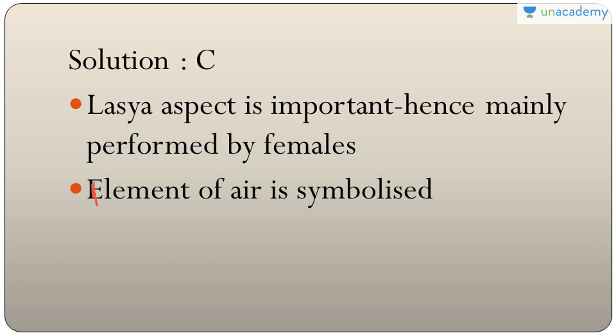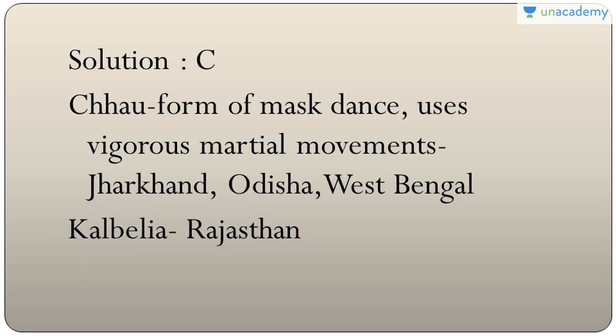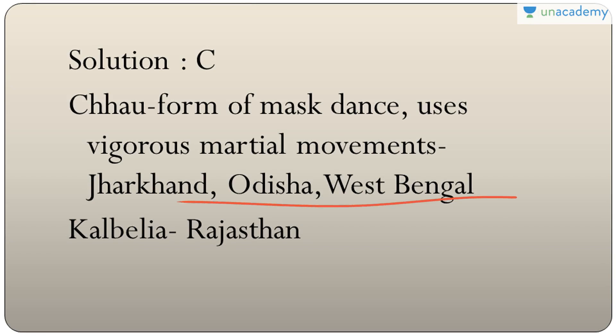Question five: which dances are listed in UNESCO's representative list of intangible cultural heritage of humanity — Chau, Kalbelia, or both? Both are listed, so the answer is C — both A and B. Chau is a mask dance using vigorous martial movements, famous in Jharkhand, Odisha, and West Bengal. Kalbelia is a famous dance form from Rajasthan.